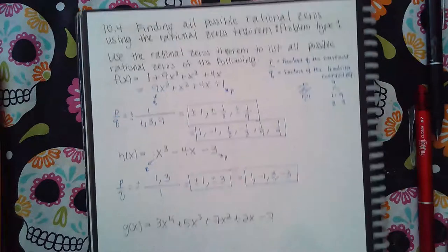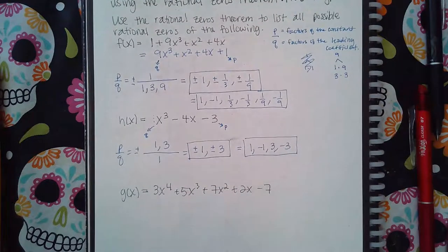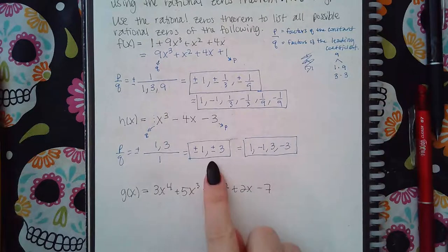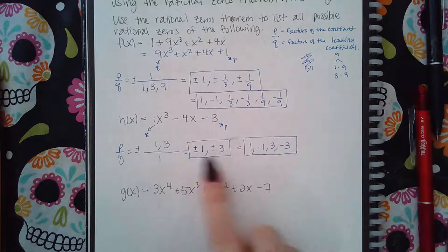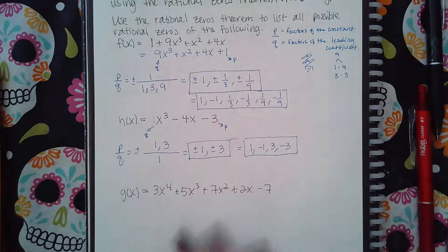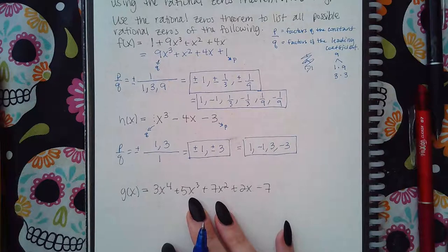Sometimes if I don't have a good clicker or my eyes are not working properly, then I don't use this button. I usually just go 1, negative 1, comma 3, comma negative 3. But now let's go ahead and move on to the next one.